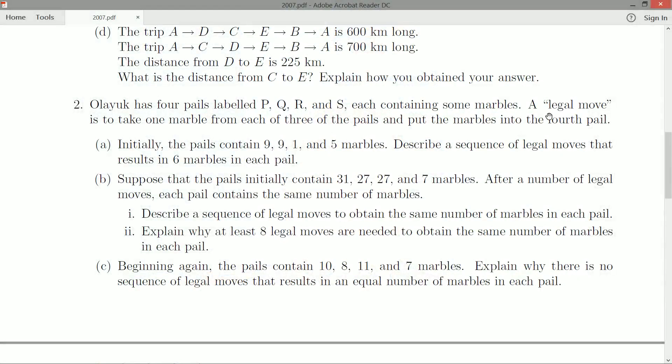Let's continue reading. So three marbles and then you put another into the fourth pail, the pail that you didn't pick from. Initially, the pails contain 9, 9, 1, and 5 marbles. Describe a sequence of legal moves that results in 6 marbles in each pail.